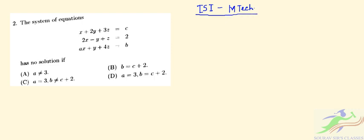This is question number 2. It gives a system of three equations: this is equation 1, equation 2, and equation 3. If the system of equations has no solution, out of these four options we have to find which condition holds.